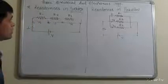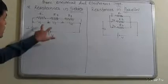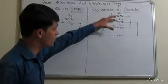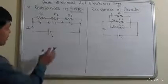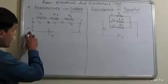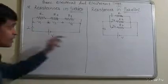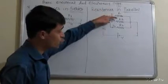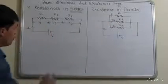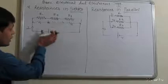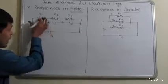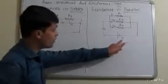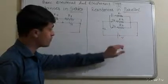Now we will see resistances in series and resistances in parallel. When connecting resistances in series — R1, R2, and R3 — and when connecting resistances in parallel — R1, R2, and R3 — what is the difference? In series, the current flowing through all resistances is the same. In parallel, the current through each resistance is different: through R1 it is I1, through R2 it is I2, through R3 it is I3. In series the voltage is different across each resistor; in parallel, all resistances have the same voltage V.